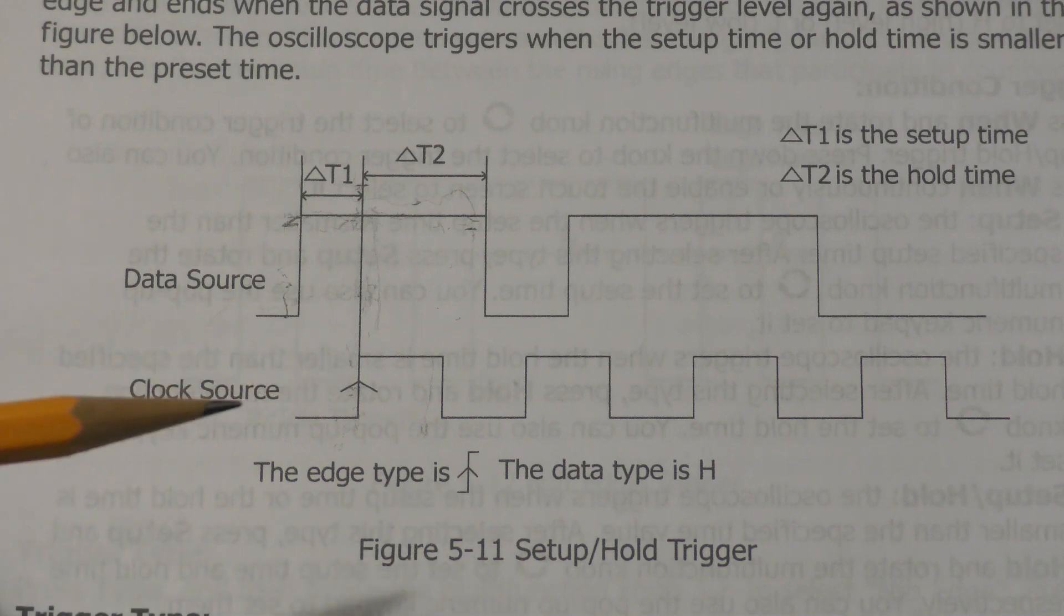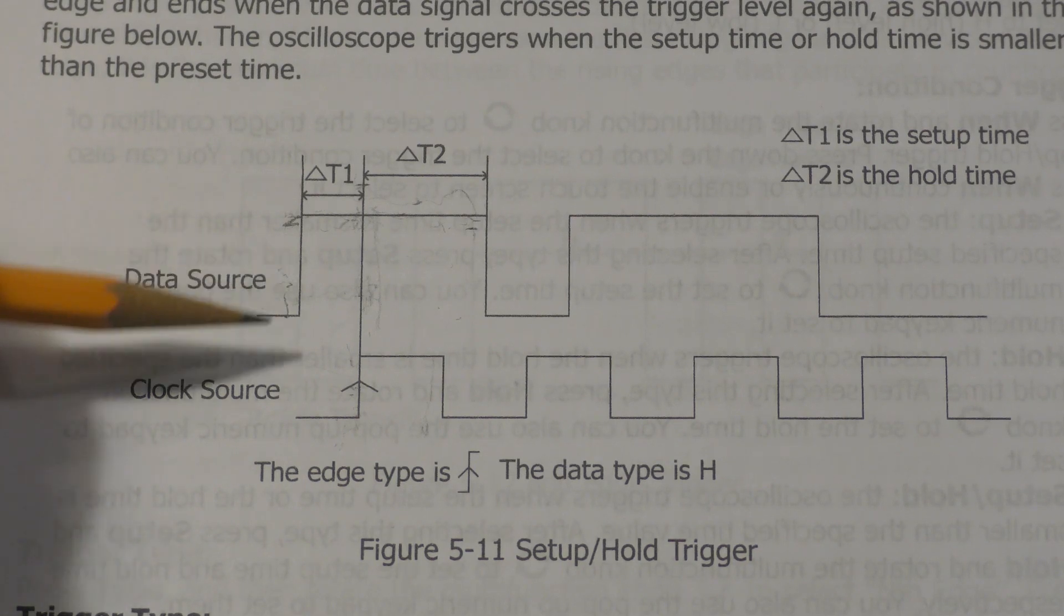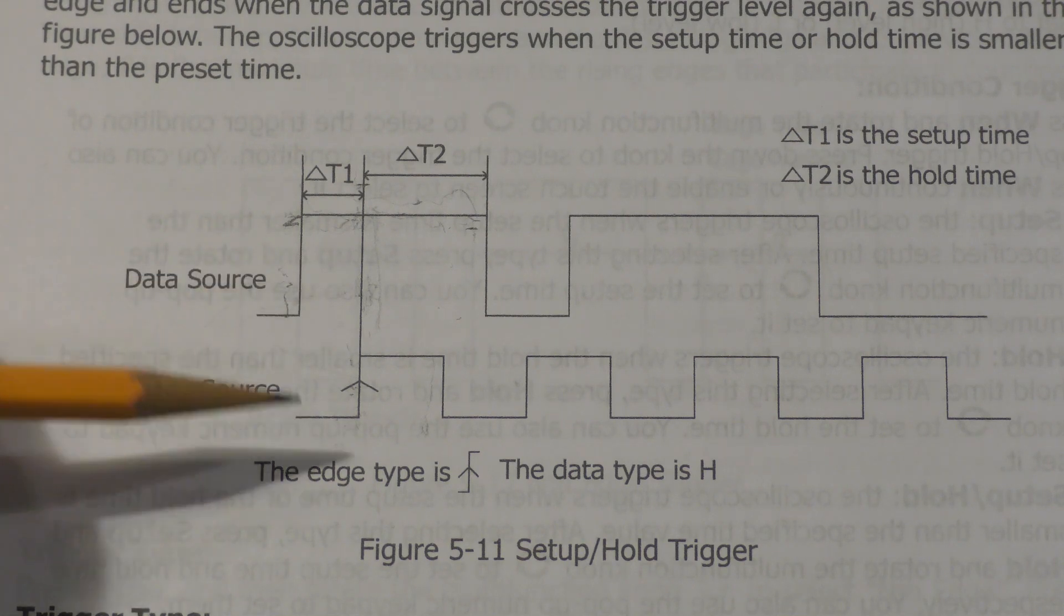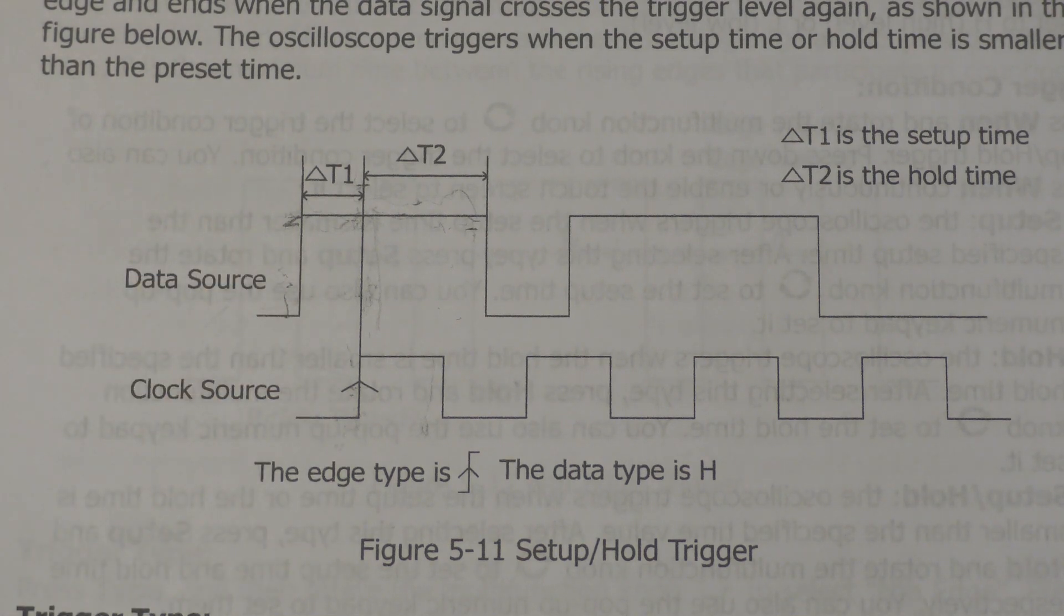Similarly, you don't want to wait a long time after the clock before you change the data again. You want to maximize performance. But as you maximize performance, you get closer and closer to these critical values. And when you exceed the critical values, you start getting unstable operation. So let's look at how you might set up an MSO5000 for this kind of trigger in this particular case.